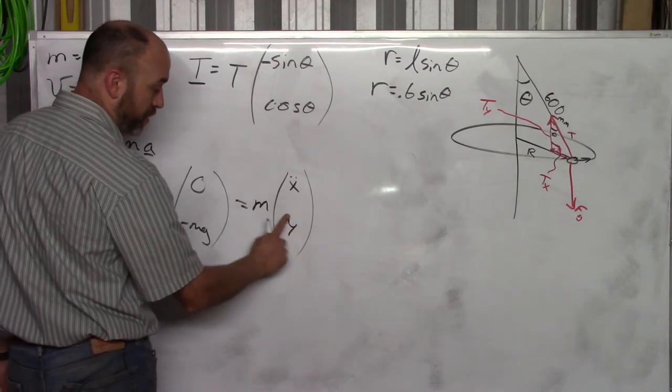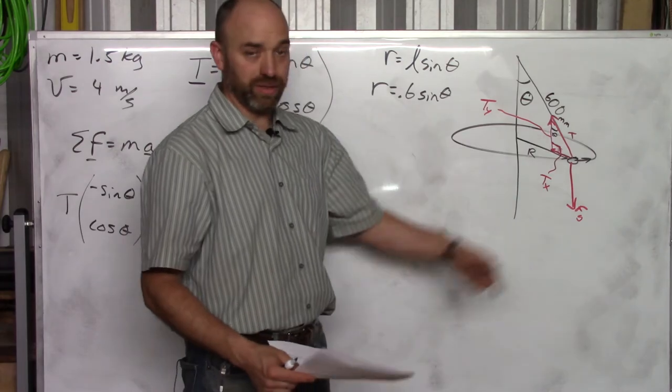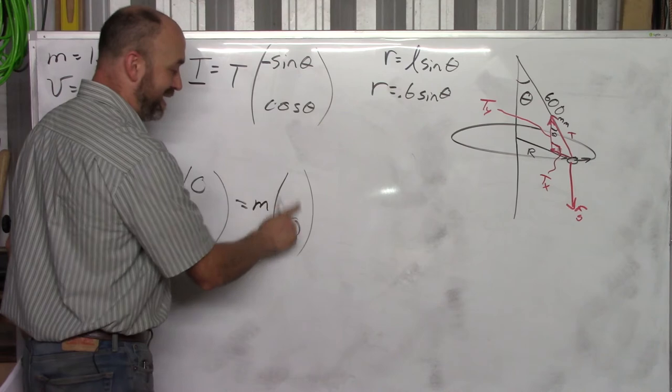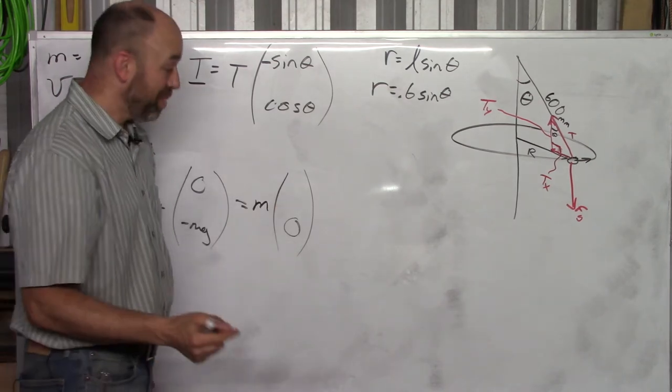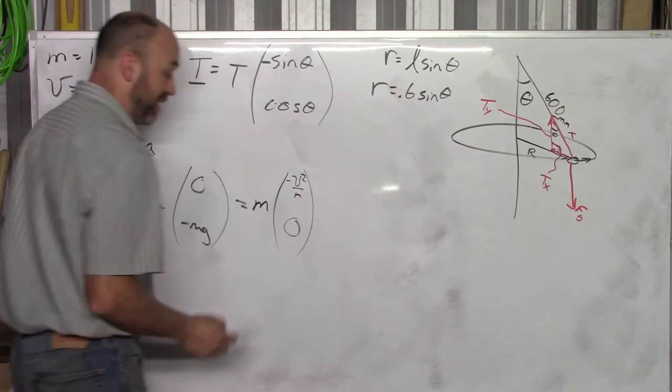And there we go. Except that now we know the answer to this. We know y double dot. How fast is that thing, that marble, accelerating up or down? It's not. It's just going in a horizontal circle. So this is 0. And we know this. It's going in a circle. That means it's accelerating towards the center. That means this is v squared over R. And it gives you v.